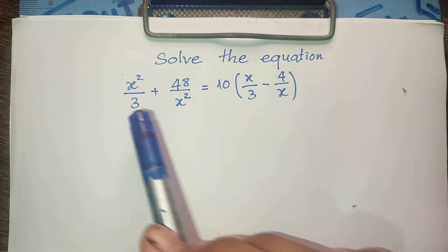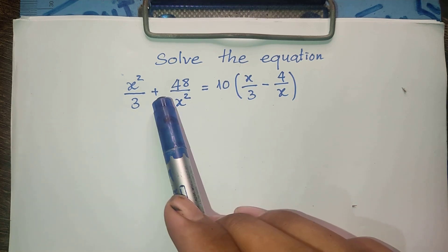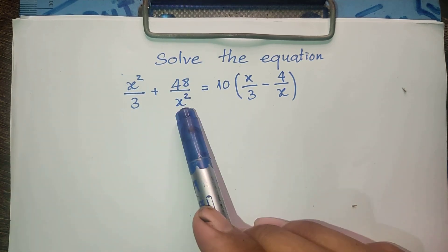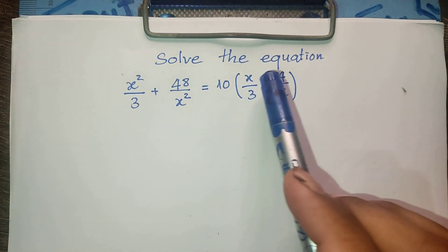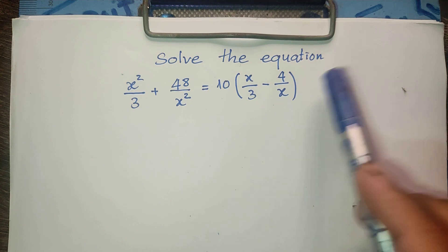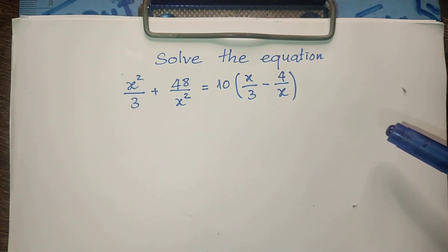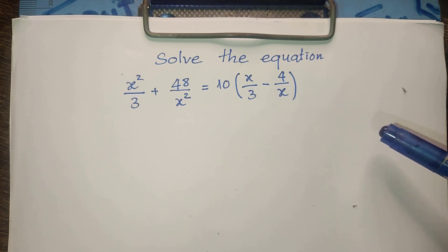This equation: x squared divided by 3, plus 48 divided by x squared, equals 10 multiplied by x divided by 3 minus 4 divided by x. Do you know how to solve this? If you know, please try it. When you've done it, please come back to watch my video from beginning to the end to verify your solution. And before we go to the solution, please don't forget to subscribe to my channel for more exciting videos.